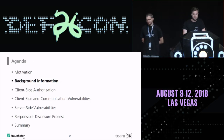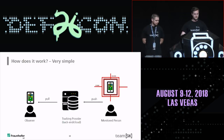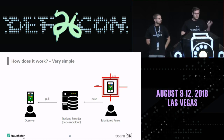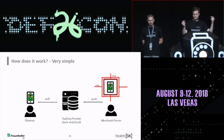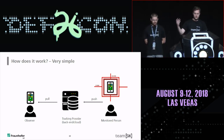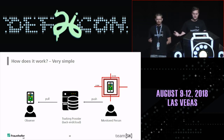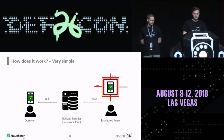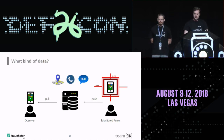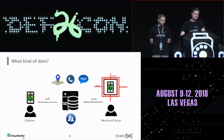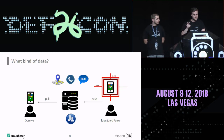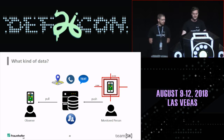Background: very simple setup so we're all on the same page. Usually you have an observer and a monitored person — both install the application and go through a pairing process. On the monitored side, it collects sensitive information like location and sends it to the backend. The observer pulls that information from the backend. The backend stores location, call history, text messages, WhatsApp messages, and so on. A couple of applications also had a messenger feature, so you can chat and exchange pictures and videos — this is important for the remaining talk.